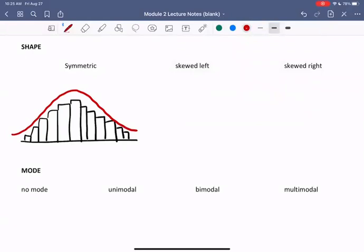So another word for symmetric is bell-shaped. Turns out these types of graphs come up a lot in data that we might collect. Bell-shaped, often called normal because it happens so frequently.